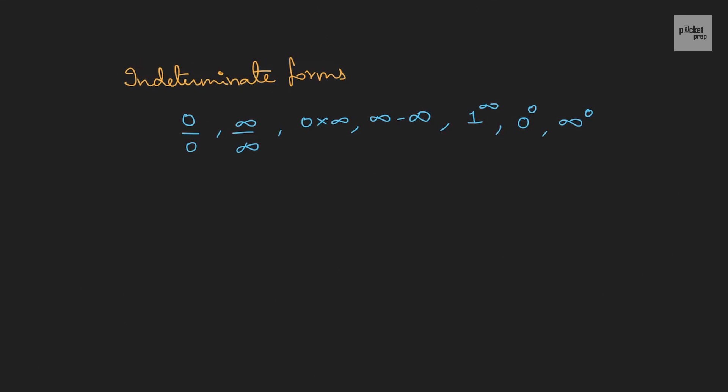Now we will discuss them in three categories. The first two I'll take it as case 1, the next two as case 2, and the last three as case 3. Let us start with the first one. Let us get into the case 1 category. That is 0 by 0 and infinite by infinite.